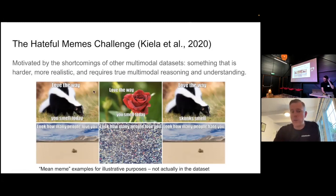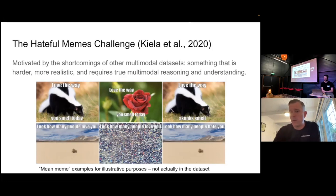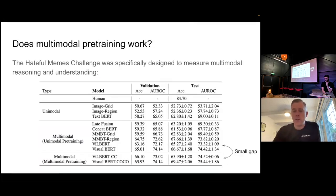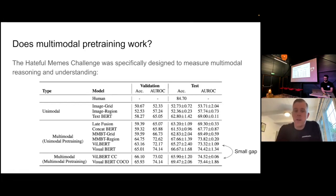These are meme examples — the actual dataset contains real hateful examples which you don't want to put on a slide. Here's an example: 'Love the way you smell today' with a skunk — not very nice to send to a friend. But if you swap out the image, now it's a nice thing to send. Or if you swap out the text and change one word — 'love the way skunks smell' — now it's also harmless. You can make very subtle changes to one single modality and they radically alter the correct label for the meme.